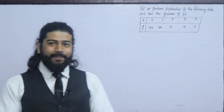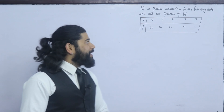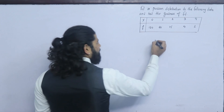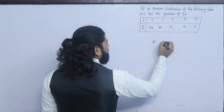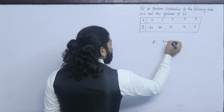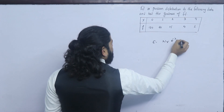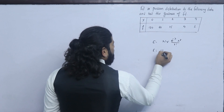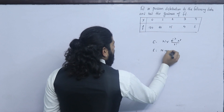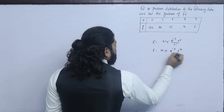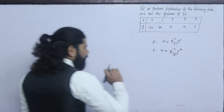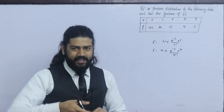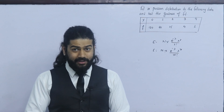We will fit the Poisson distribution. The expected frequency formula is: e to the power minus lambda, multiplied by lambda power r, divided by r factorial — that is P(X=x) equals e to the power minus lambda times lambda power x divided by x factorial.